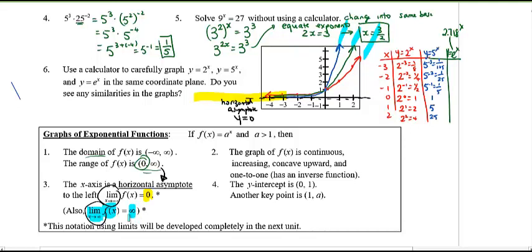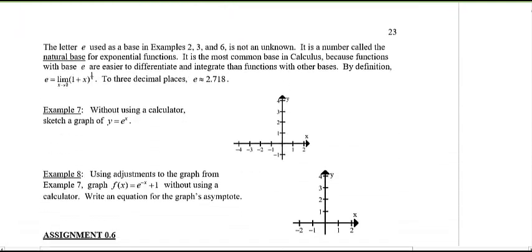Other shared properties: all three graphs are continuous, increasing, and concave upward — we'll discuss concavity in calculus. They are also one-to-one, passing both the horizontal and vertical line tests. A key point is the y-intercept at (0, 1). Also, when x = 1, the y-value equals the base — that's a key reference point for each graph.